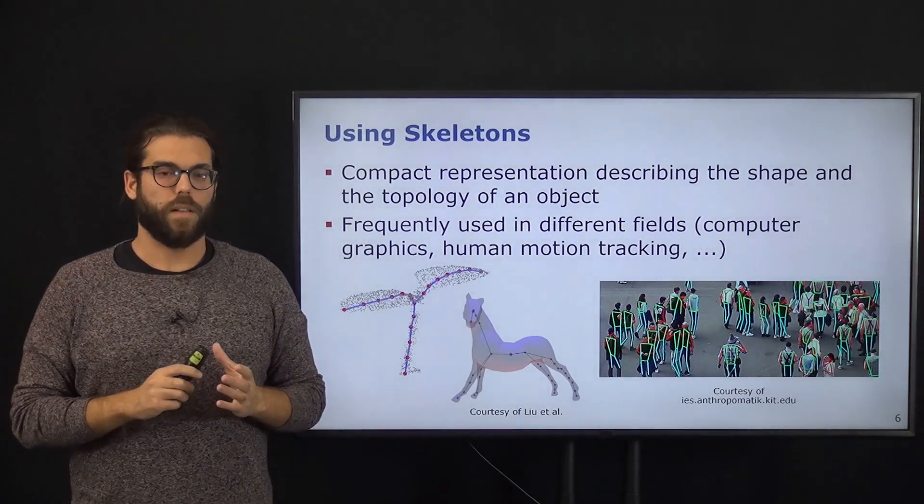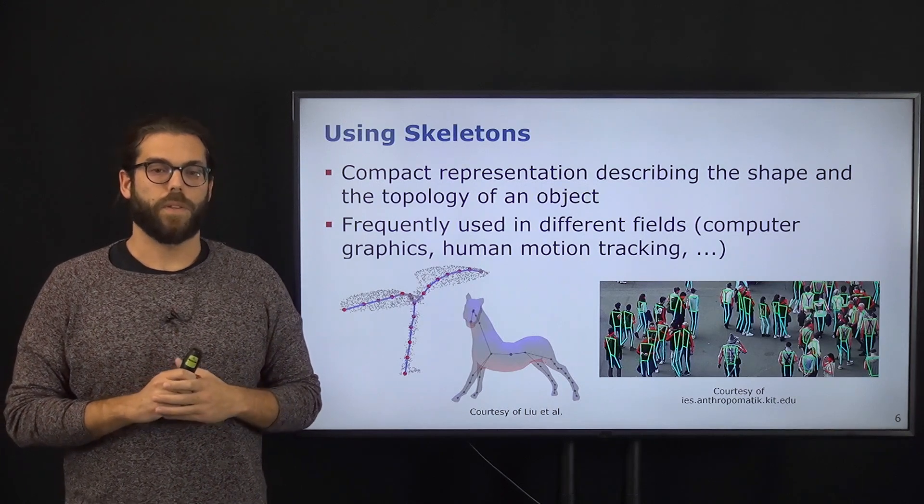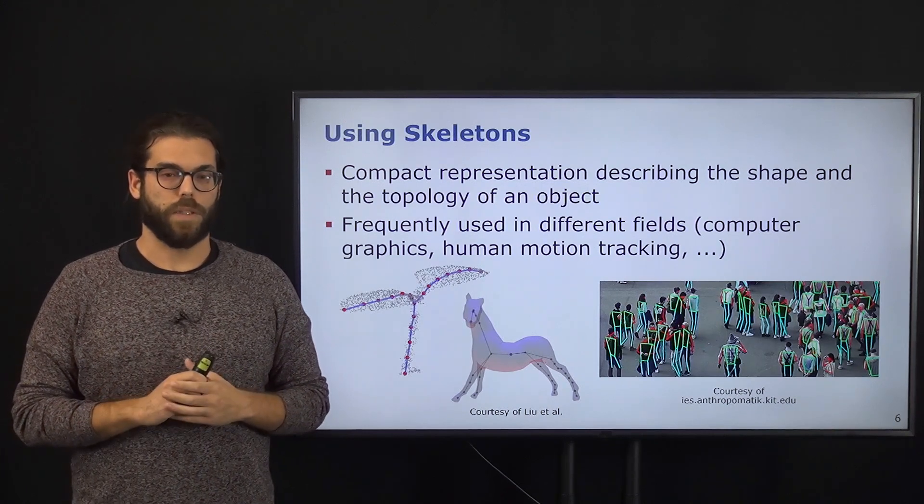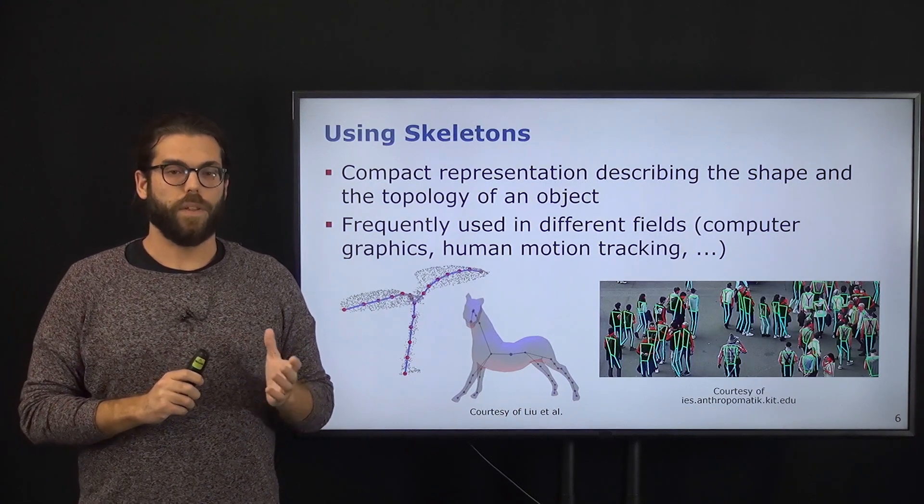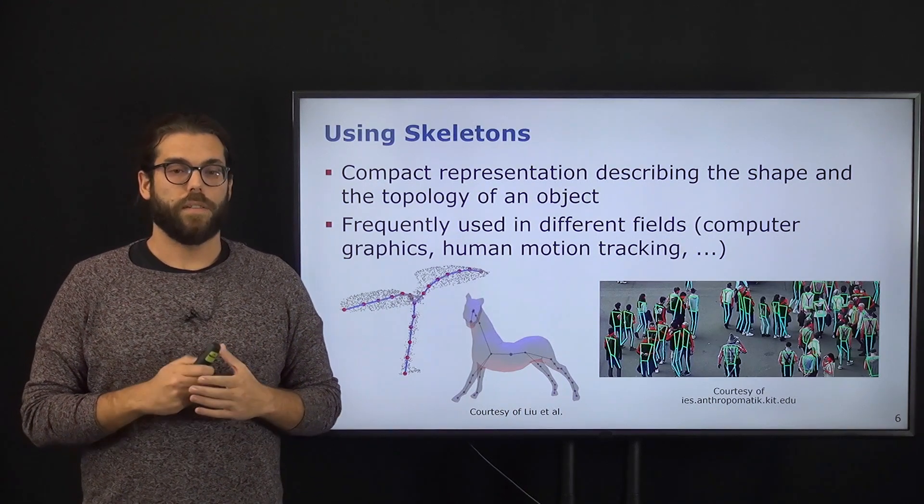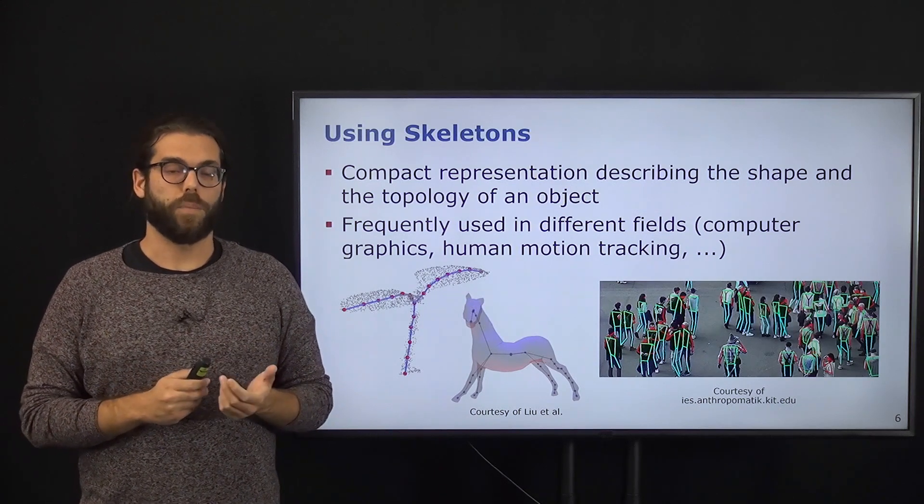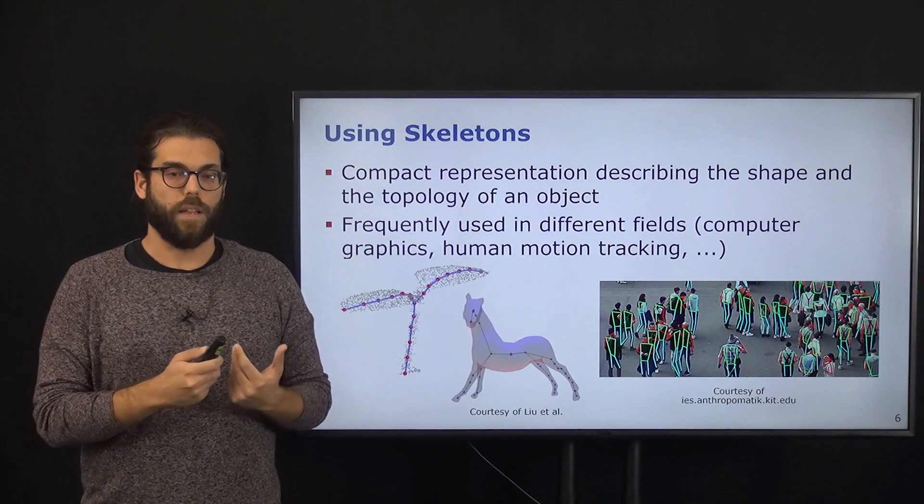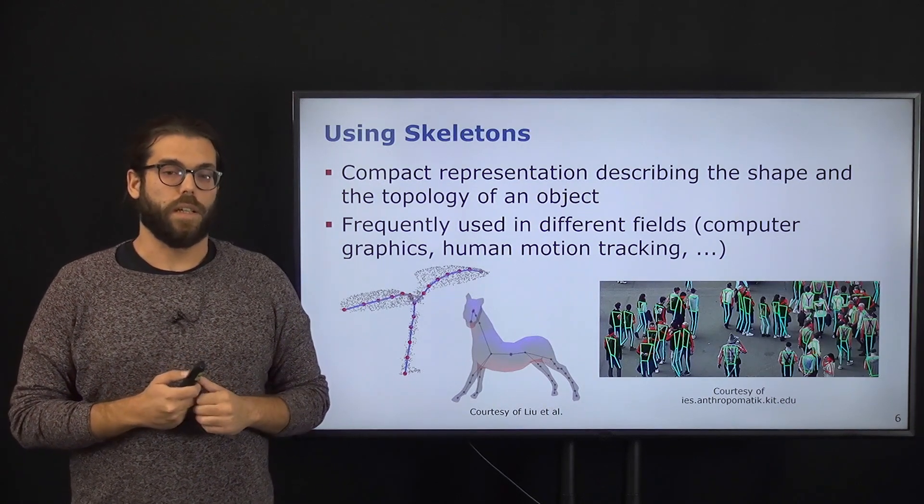Skeletons, in general, are a compact way to define the topology and geometry of an object. They are used in different fields. For example, in computer graphics they are used to drive the animation of characters, or in computer vision they are used to understand the pose of humans and recognize activities.